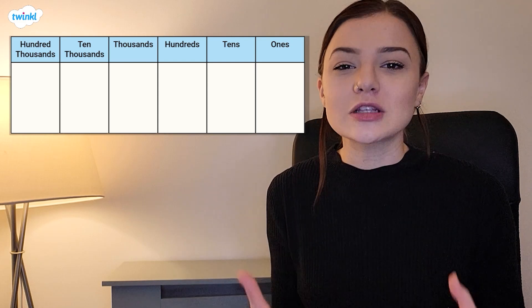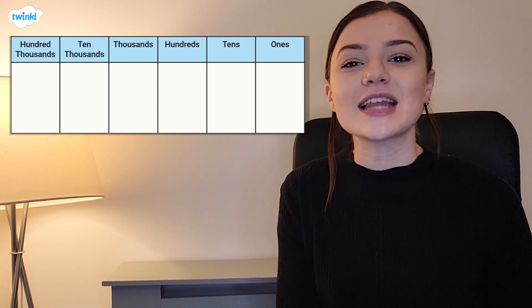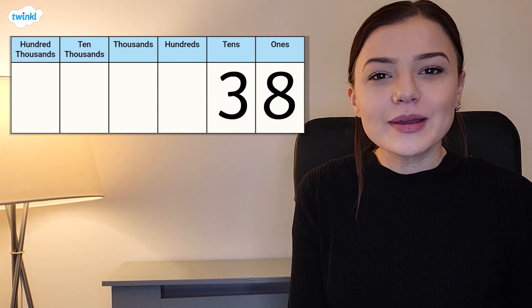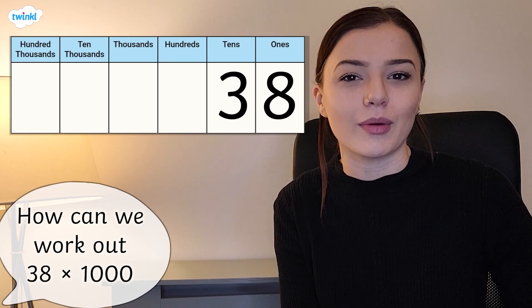Let's try to apply this knowledge when multiplying a number by 1000 using the place value chart. Here is the number 38. How can we use the place value chart to help us work out the answer to 38 multiplied by 1000?